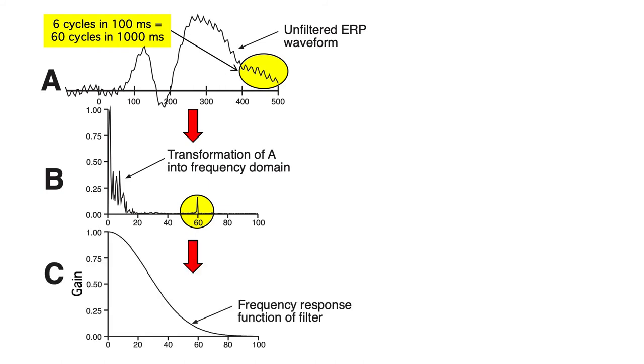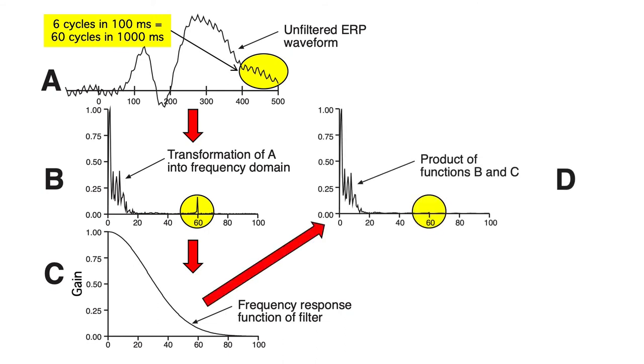Now, here's our frequency response function. The gain at a given frequency quantifies the amount that that frequency will pass. If the value is 0.9, then 0.9 of the activity will pass. So, we can just multiply each gain value in the frequency response function by the amplitude at the corresponding frequency in the Fourier transform of the ERP.